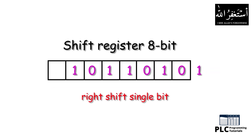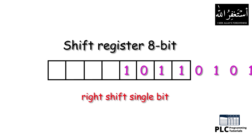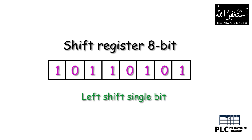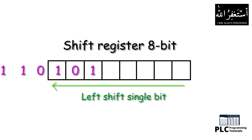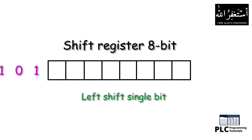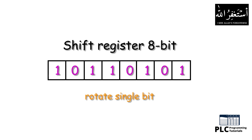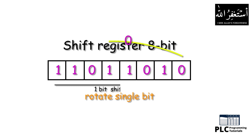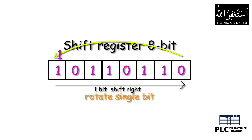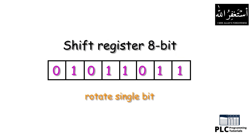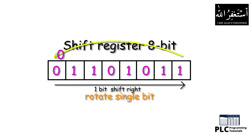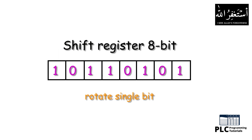One thing to note is that we can shift a single bit or two or three bits at once — it depends on our programming requirements. Similarly, if we are using a left-shifting data register, the data bits inside the shift register will be shifted to the left side each time the shift instruction is executed. Another type is the rotate data shift register, where the last data bit will be shifted to the first place in the shift register and all other data bits will be shifted one place ahead, so we can imagine the bits are being rotated in the shift register each time the instruction is executed.